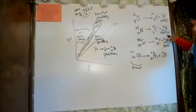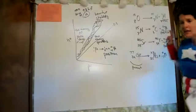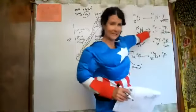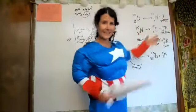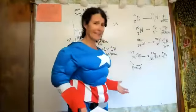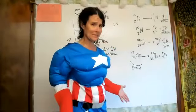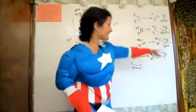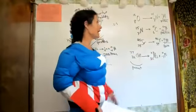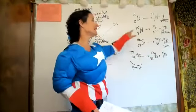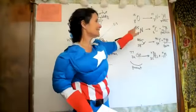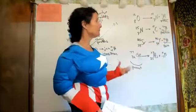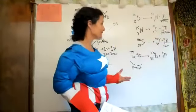Going back to nitrogen: this nitrogen-15 has too many neutrons, so we would predict beta decay. But this actually went through positron emission — and if you look at what it made, it made carbon-15, which is also not going to be stable, so that's going to go through further decay.